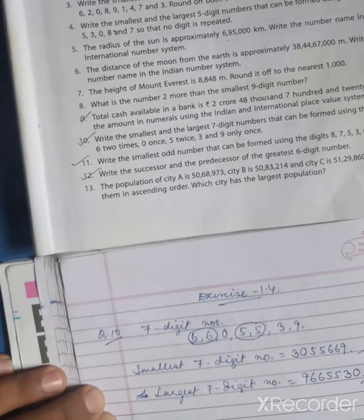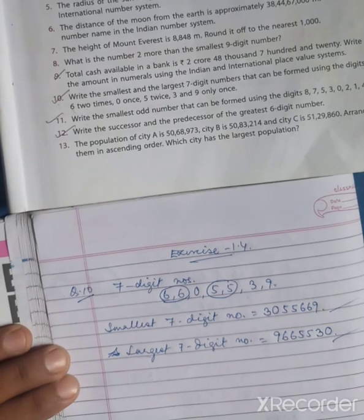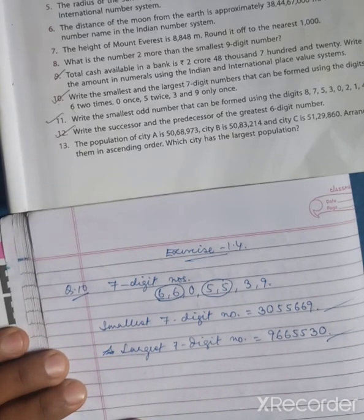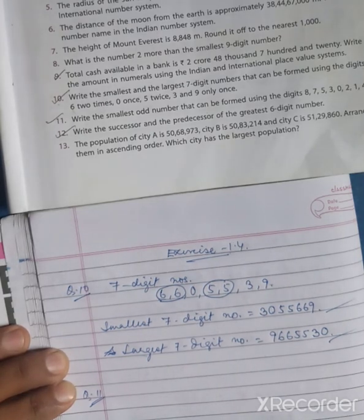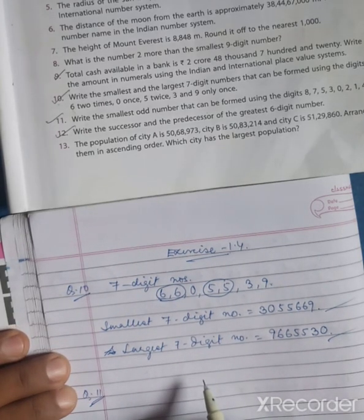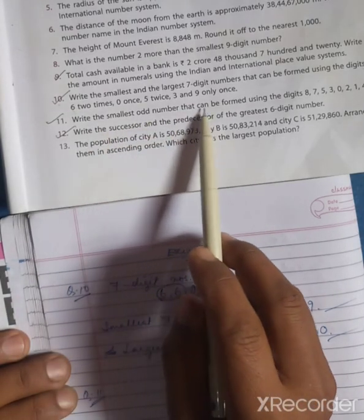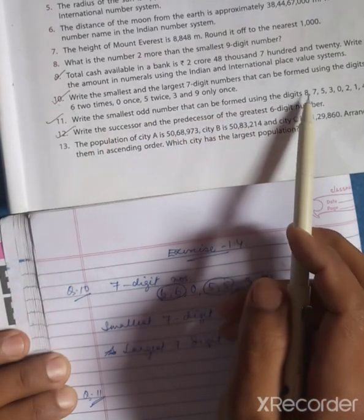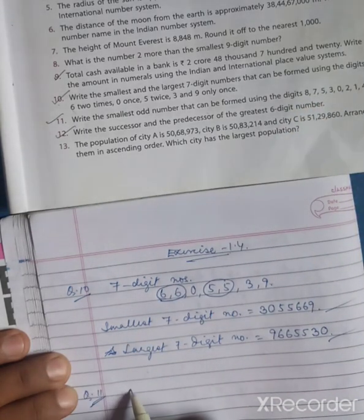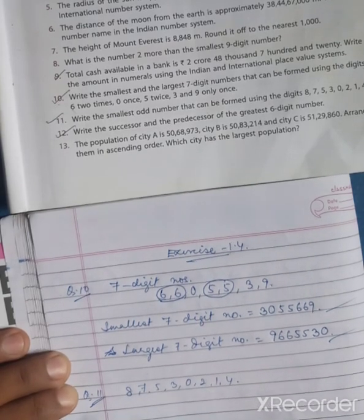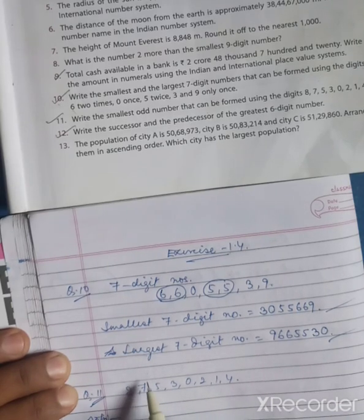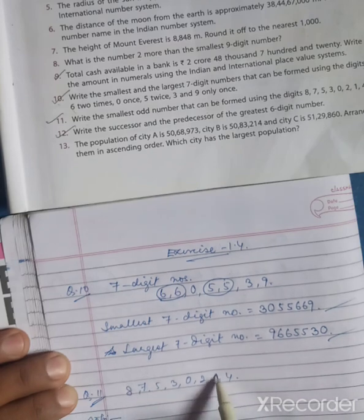Question number eleven: juggling with numbers — which is the smallest odd number that can be formed using the digits 8, 7, 5, 3, 0, 2, 1, 4?